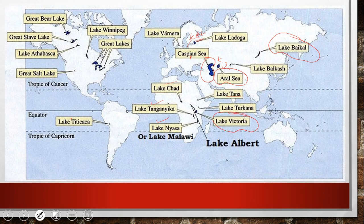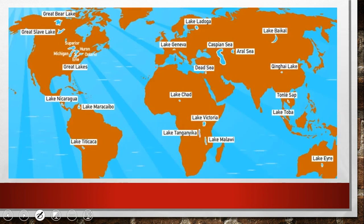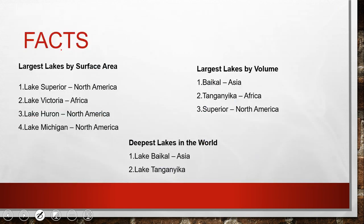Other important lakes include Lake Titicaca, Great Salt Lake, Great Bear Lakes, Great Slave Lake, Lake Athabasca, and Lake Balkash. Regarding facts: the largest lake by surface area is Lake Superior in North America. Lake Victoria is the largest in Africa. In order: Superior, then Victoria, then Huron and Michigan — three of the five Great Lakes of North America are among the largest in the world.